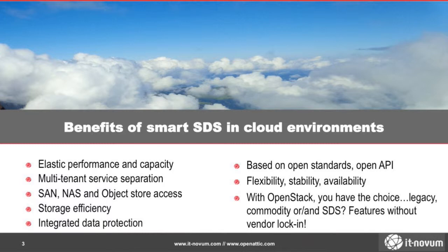Most of all, you want to be based on open standards — on a technical level, an open API. With OpenStack you basically have the choice to use that. OpenStack provides a set of documented and open APIs, so you can choose the right underlying storage platform depending on your needs — either integrate legacy vendors, or pick software defined storage, open source, or perhaps a combination of both.